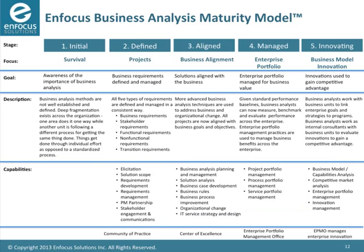To move to level two and have an organizational capability, it usually takes some type of coordination effort. A good way to do that is a community of practice. Centers of excellence normally move organizations to maturity level three. Level four takes much more involvement early in projects and at the portfolio level — that's where the center of excellence gets consumed by what I call the Enterprise Portfolio Management Office. At level five, you're working with businesses to identify areas where they can gain competitive advantage.